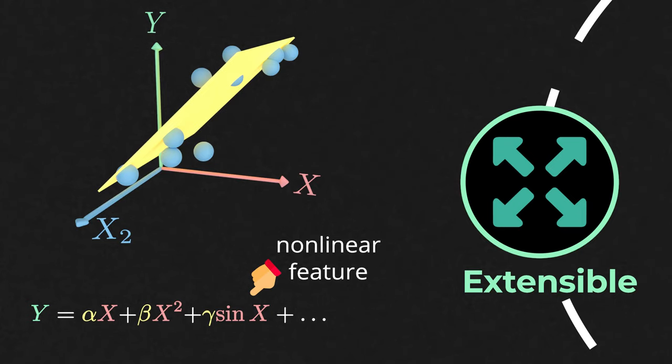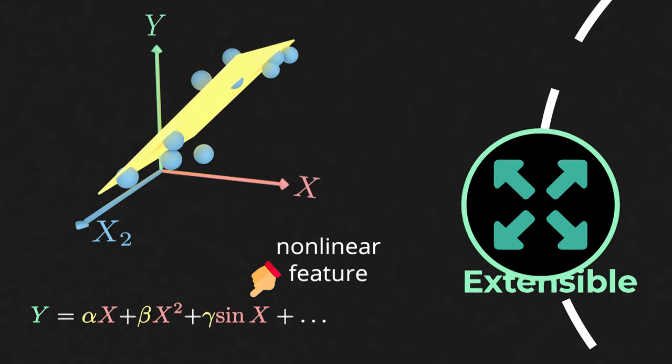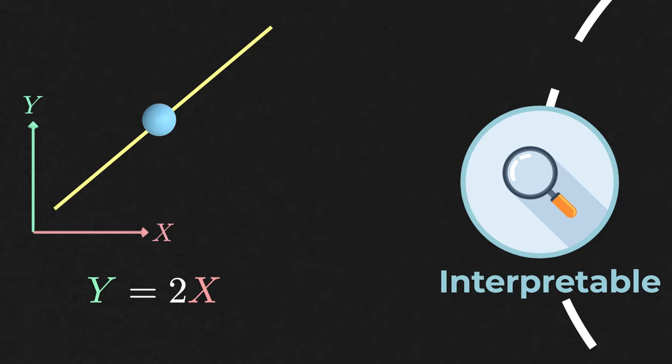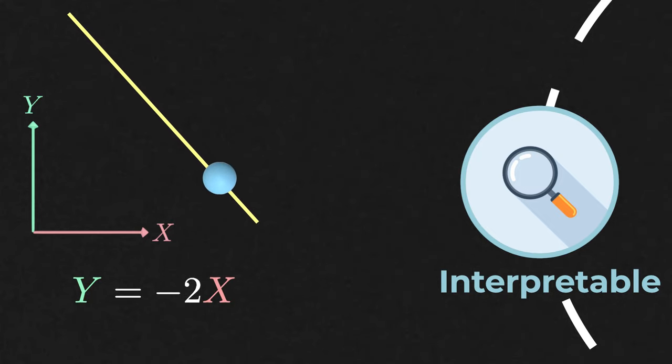Another compelling aspect of linear regression is the fact that we can interpret the coefficients that we get. For example, if the slope is positive, x and y move in the same direction, and if the slope is negative, they move in opposite directions.